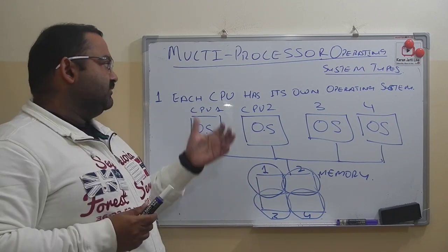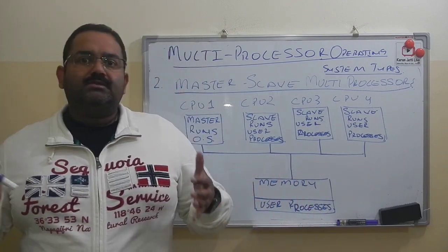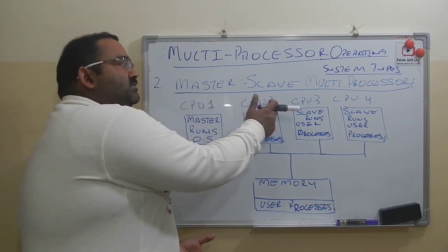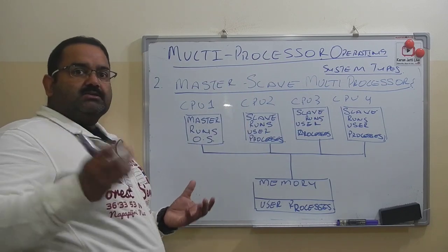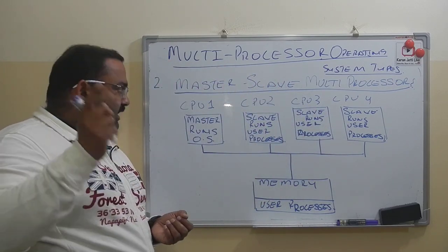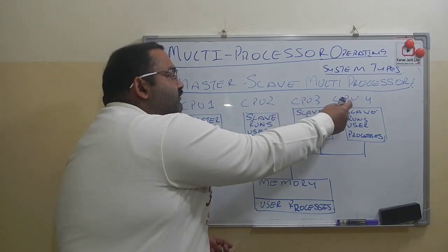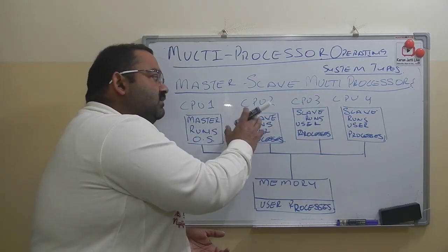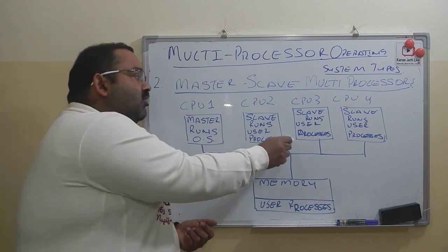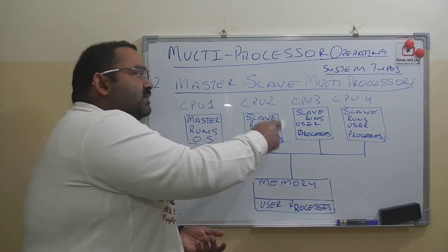That was the first approach in which each CPU has its own operating system. The second approach is called master-slave multiprocessors. In this arrangement we again have four CPUs. One CPU runs the operating system and the rest run user processes. CPU 1 is the master and runs the operating system, while CPUs 2, 3, and 4 are slaves — they do not run the operating system but run user processes. Any system call needed by a slave CPU is directed to CPU 1, the master.